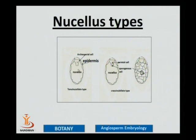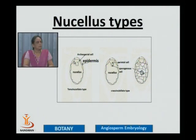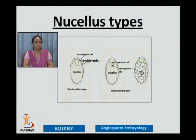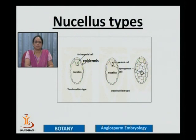In some flowering plants, in the young nucellus, a single fertile cell develops just below the epidermal region — an archesporial cell developing in the hypodermal region. In these plants, this archesporial cell located in the hypodermal region directly functions as the megaspore mother cell without undergoing any type of division. Such a type of nucellus, where the archesporial cell or megaspore mother cell is hypodermal, is known as the tenuinucellar type of nucellus.